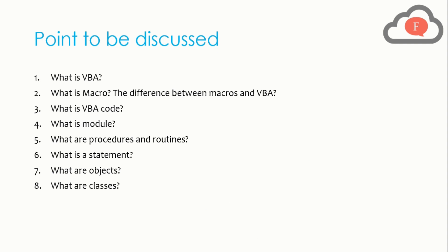In the first point we will cover what is VBA. In the second point, what is a macro and the difference between macros and VBA. Third, what is VBA code. Fourth, what is a module. Fifth, what are procedures and routines. Sixth, what is a statement. Seventh, what are objects. And in the eighth point, what are classes.